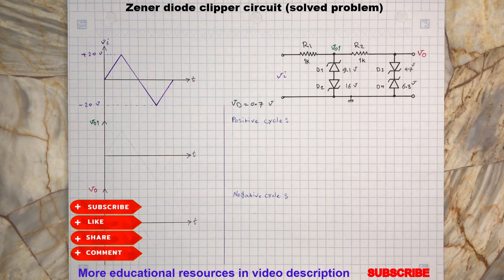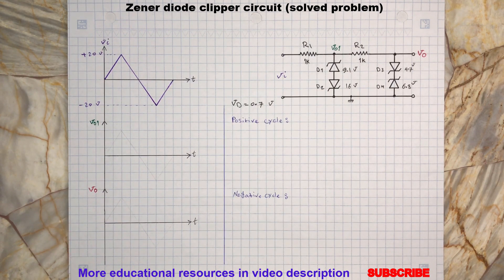In this Zener clipping circuit, the diode D1 is reverse biased during the positive half cycle, while D2 is forward biased which it will act as a normal diode.